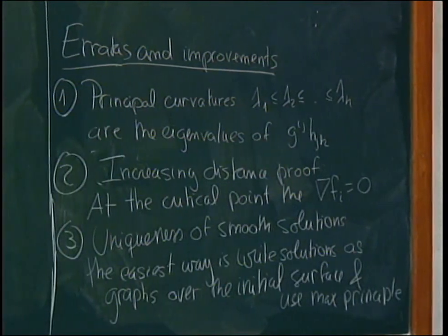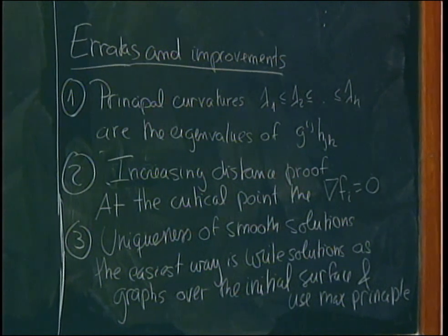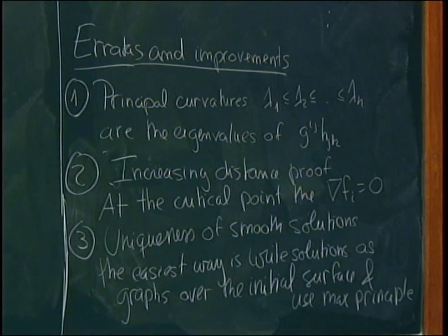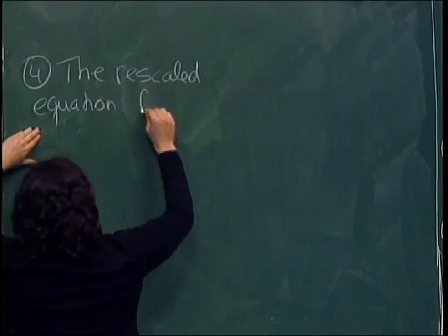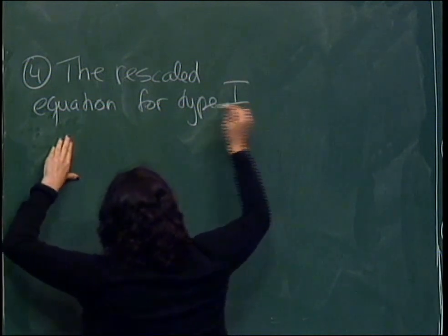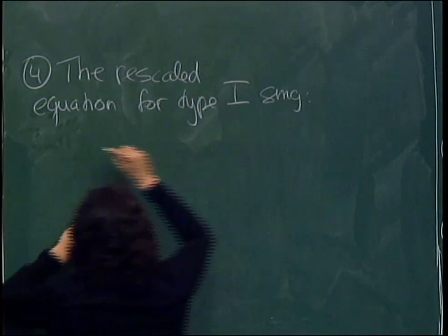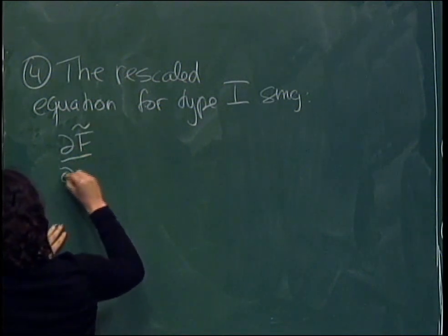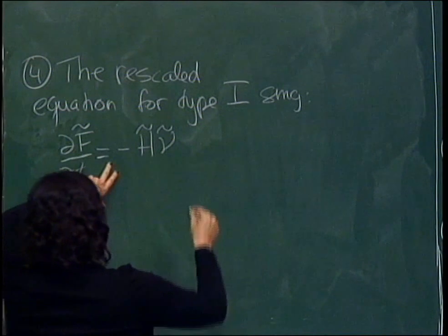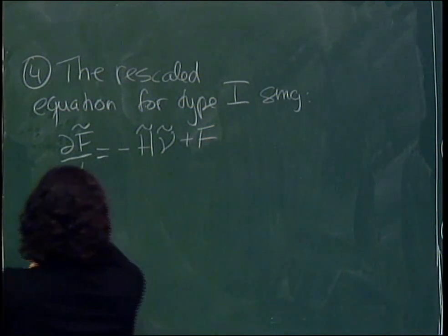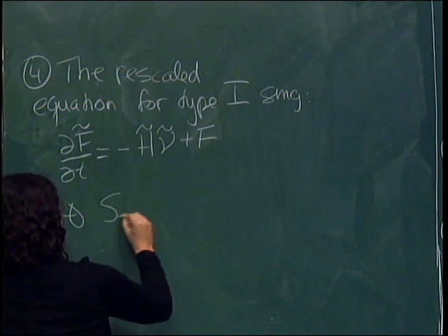About yesterday: there was a sign mistake when I computed the rescaled equation, because it's a matter of what you think the mean curvature is — there's a sign there on the choice of the normal. For type 1 singularities, the equation should be df̃/dt̃, and because of the way I'm choosing the sign, the equation that the shrinkers — self-similar shrinkers — satisfy in this notation for the exterior normal is that H̃ equals f̃ dot ν. You can verify this because spheres should satisfy this equation.